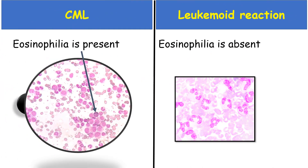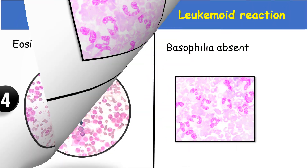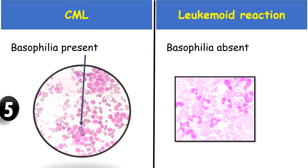In chronic myeloid leukemia eosinophilia is present, whereas in leukemoid reaction eosinophilia is usually absent. In chronic myeloid leukemia there is basophilia present, which is one of the diagnostic factors, whereas in leukemoid reaction basophilia is absent.